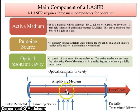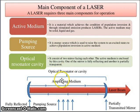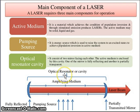The second component is the pumping source, which is used to pump the medium in a laser. The pumping source in case of ruby laser is a xenon flash lamp. In case of helium-neon laser, the pumping source is a combination of anode and cathode. In case of CO2 laser, it is also anode and cathode. It is an energy source used to raise the system to an excited state to achieve population inversion.